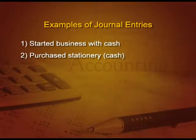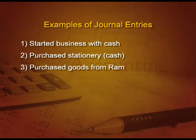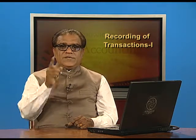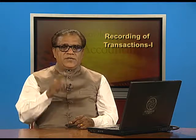Next: purchase goods from RAM. Goods are coming in — it is an asset, it will be debit. And who is the giver of these goods? RAM. So he will be credit. Debit goods, credit RAM. When we write this entry, it will be: purchase account debit and RAM account credit. When we purchase goods and sell goods, we write purchase and sales, not goods.